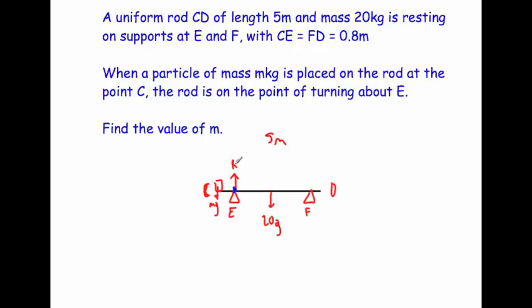You could find R by saying forces up equals forces down, so R = mg + 20g. You could use that and take moments about any other position - the centre of the rod or support F. But I've chosen to take moments about E.